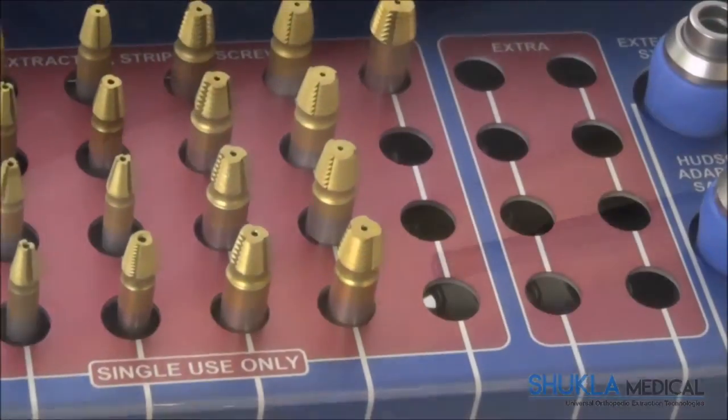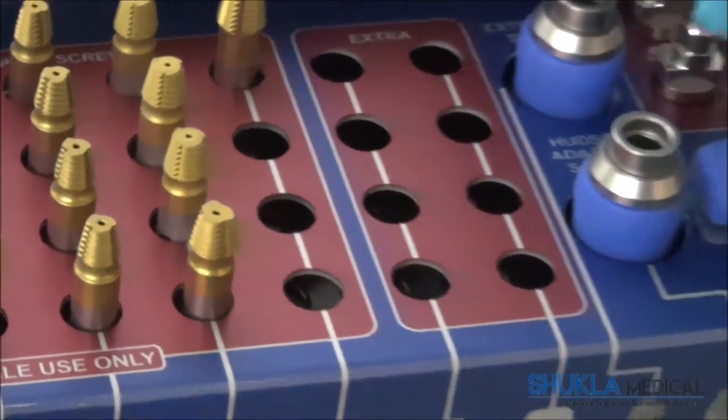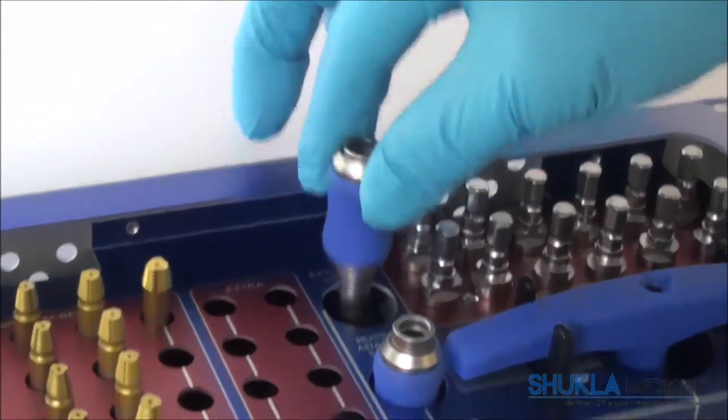To the right of the stripped screw extractors are two empty rows, designed for additional screw extractors if needed.